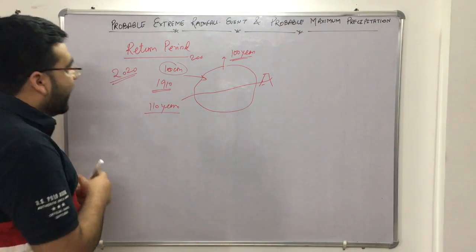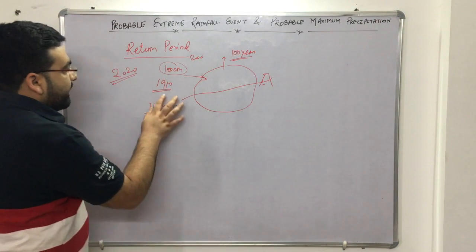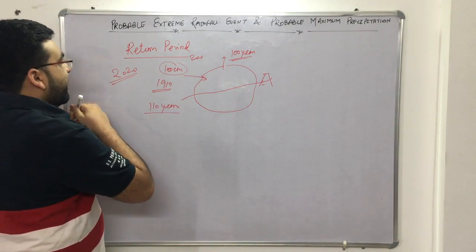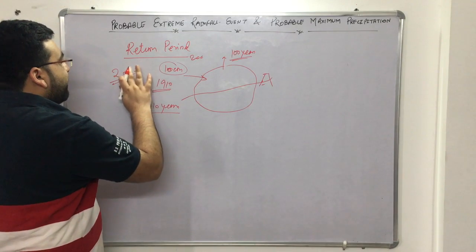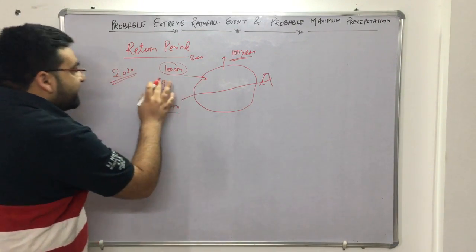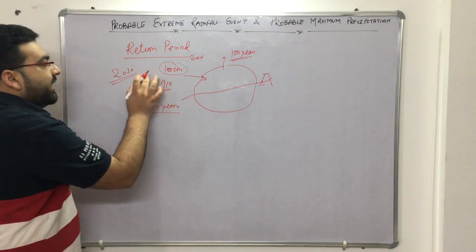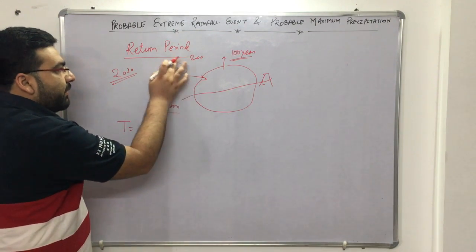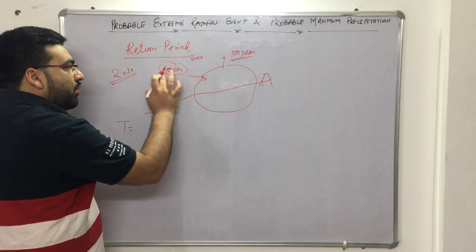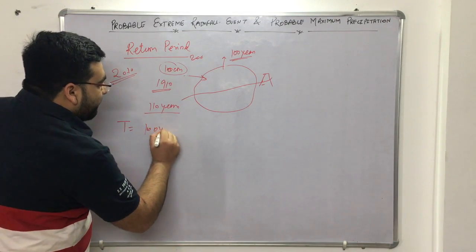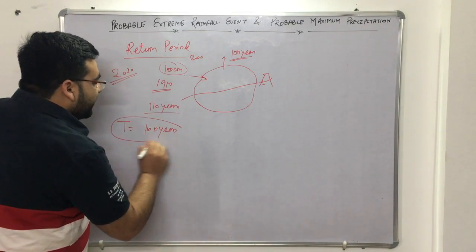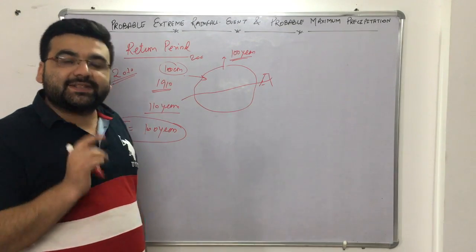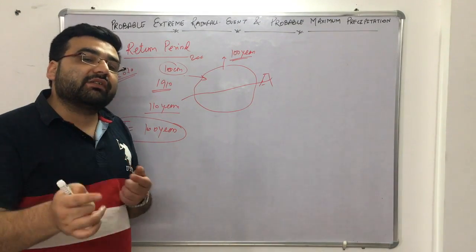For example, if a rainfall of 10 centimeters came in 1910 and again in 2010, then the return period of that type of storm is 100 years. It means that this type of storm occurs at least once every 100 years — that is the return period of a storm.